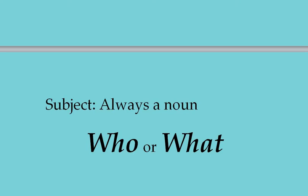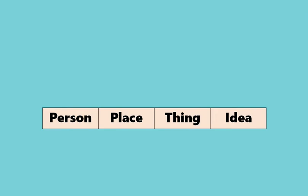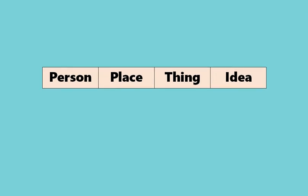There are a lot of other different roles you'll learn about in the future, such as being an object or a direct object. But for now, just remember that nouns have to be in a sentence — at least one has to be in a sentence, and if it plays the role of the subject, it is who or what the sentence is about. A noun is always going to be one of four things: a person, place, thing, or idea.